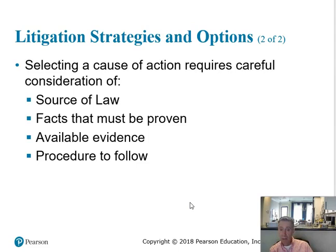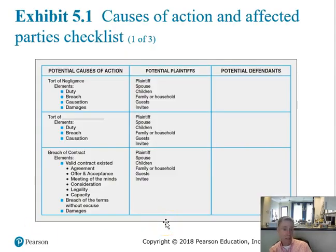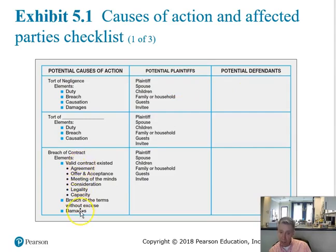Is there a legal remedy for the situation? Are you going to be able to prove that this action occurred? What sort of evidence is available and what's the process? Here's an example of a checklist. For tort, these are the elements and these are the plaintiffs and the potential defendants. Breach of contract — all of these elements may be met. We've covered these in other courses, so this should just be a reminder.